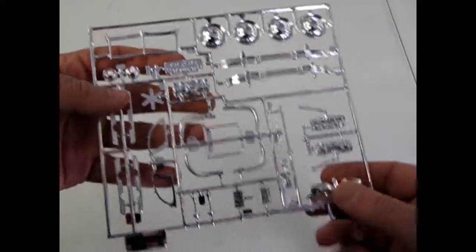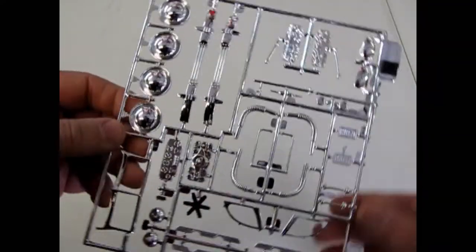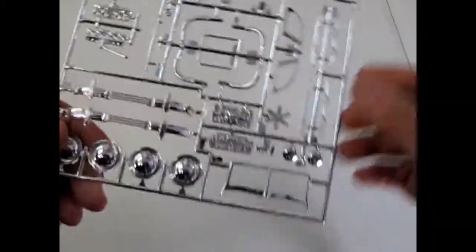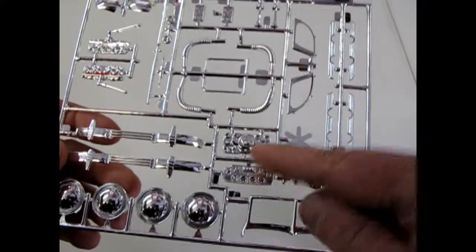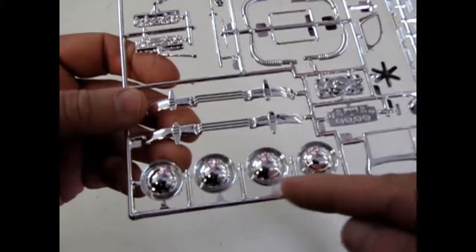Now let's look at the plastic itself. We will begin with the chrome tree which was done very nicely. Very clean. No dust in the chrome or any other problems with it. And there you can see the cylinder head and the nice hubcap details.